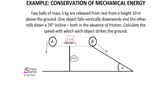We can do this using the conservation of mechanical energy. The conservation of mechanical energy tells us that the change in mechanical energy is equal to zero. This can be written as final mechanical energy minus initial mechanical energy equals zero, or that the initial mechanical energy is simply equal to the final mechanical energy. Mechanical energy is the sum of kinetic energy and potential energy for an object.